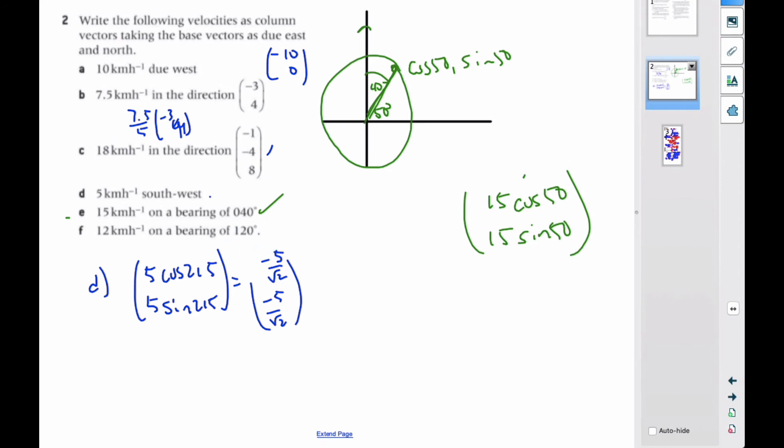And then if I want to go a bearing of 120 degrees, well, that means I'm going to be, 120 goes down to here. In this direction, same idea, but now I know that this angle here is 60, negative 60. Or, I could also go 300 this direction.